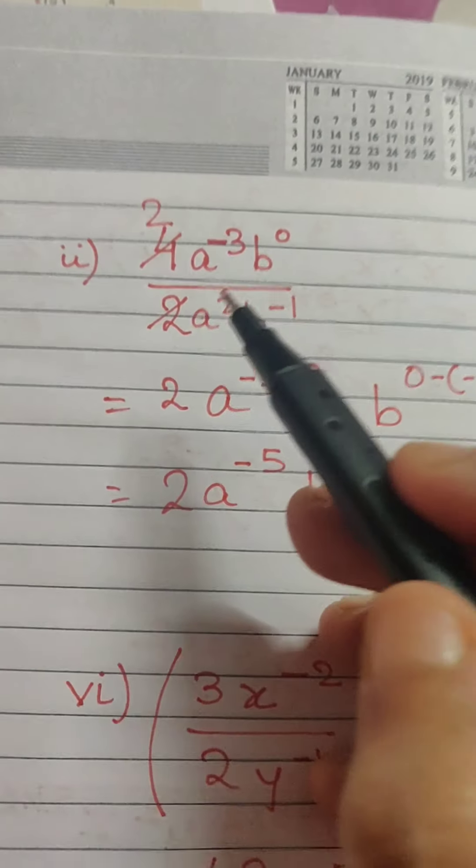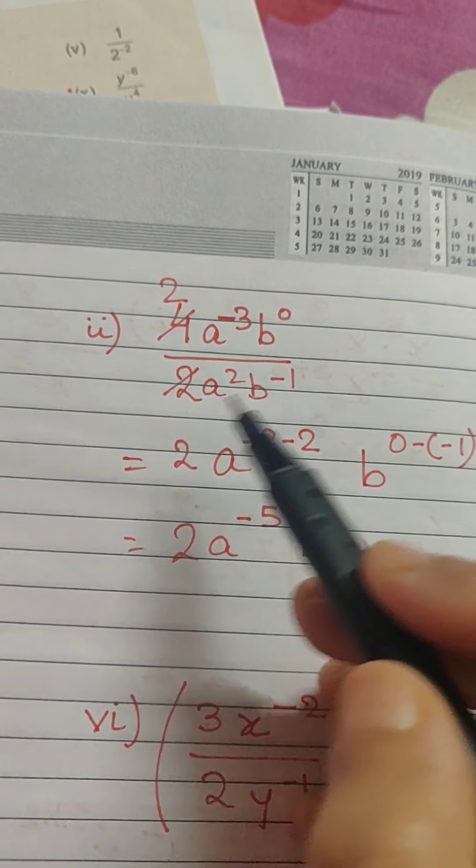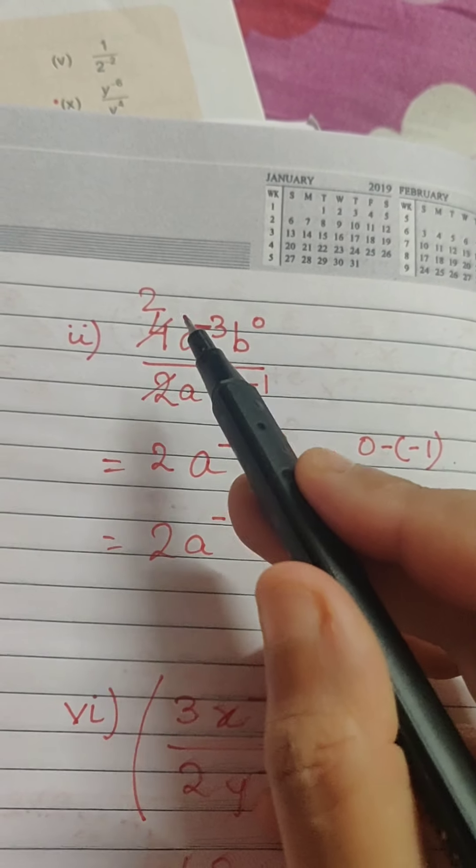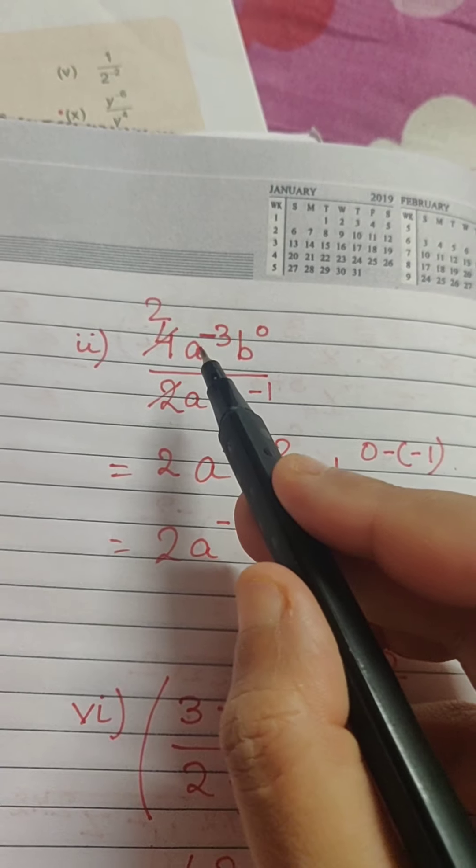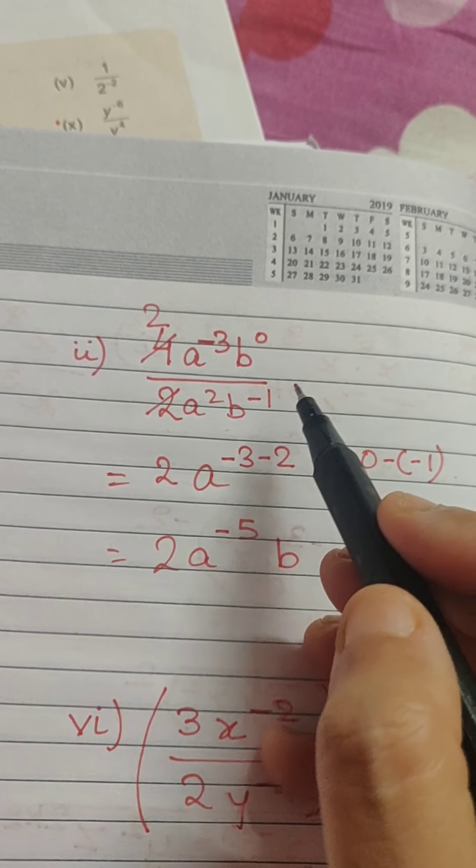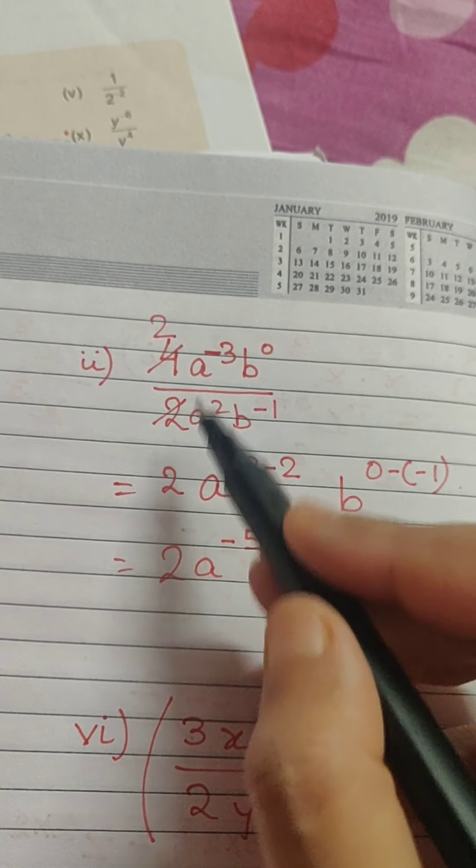Next question is 4 a to the power minus 3 b to the power 0 divided by 2 a square b to the power minus 1. We can easily reduce this 4 and 2 we get 2 out of it. Now, see here a and a same basis b and b same basis. So, we know how to divide the exponential form if the bases are same.